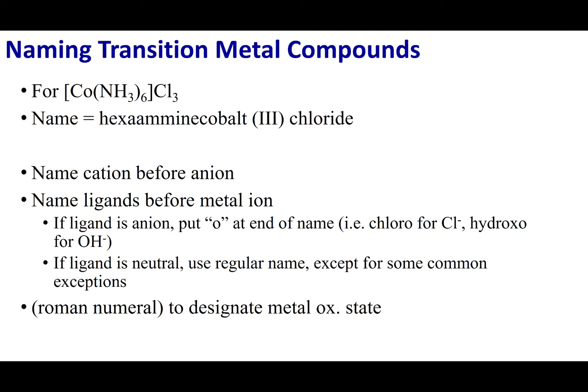We're going to start with a compound that we were discussing during our last lecture. To name these compounds, you're going to follow the same rules as before. If you have an ionic compound, you name the cation before the anion. For example, sodium chloride: sodium, then chloride. In a coordination compound, you name the cation first, then the anion. In this case, the cation is the complex ion and the anion is still chloride.